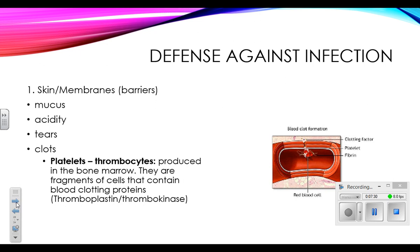Before your blood even really gets involved, you have several lines of defense against infection. The first line of defense is your skin and your membranes collectively, which we would call barriers. Skin covers the outer surface of your body, but you have membranes in most of the openings of your body — your nose, eyes, ears, mouth — that are offering some kind of barrier or protection.